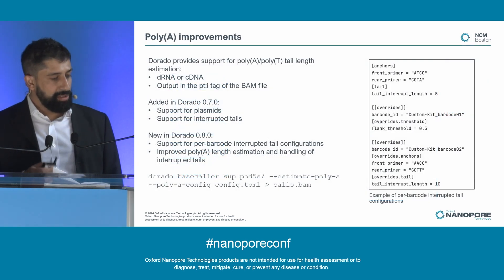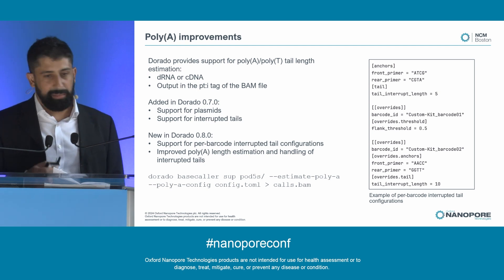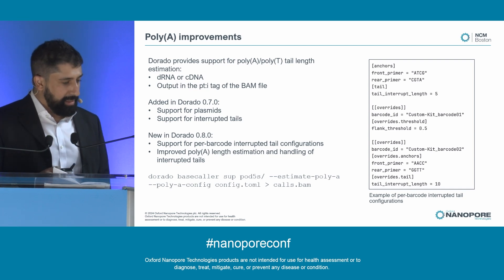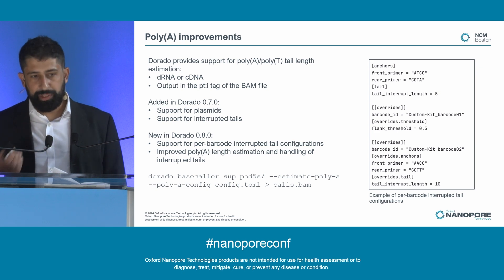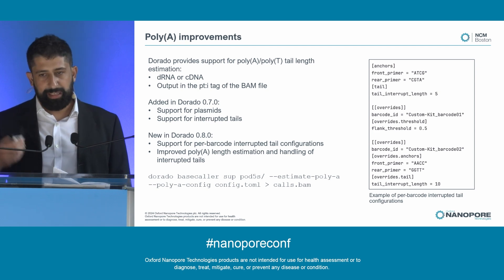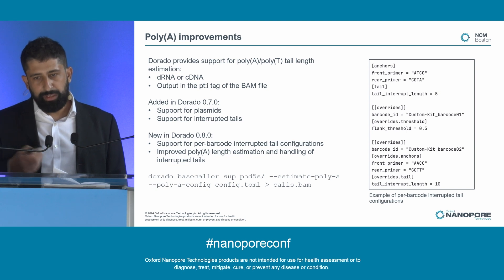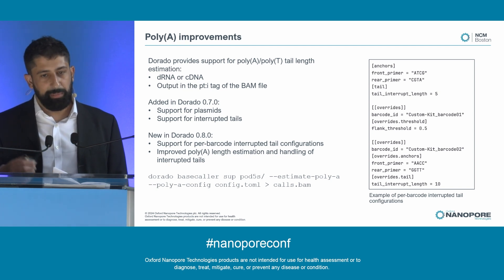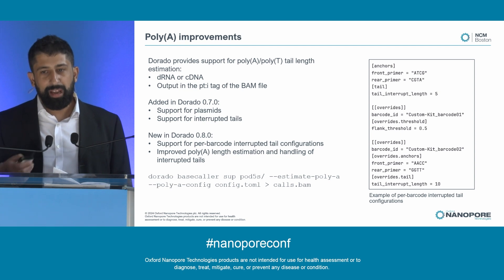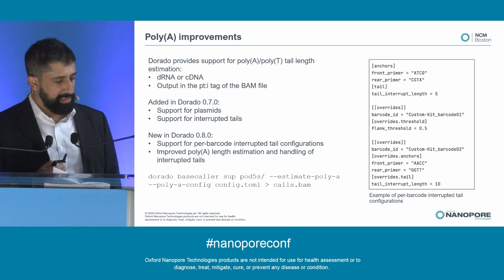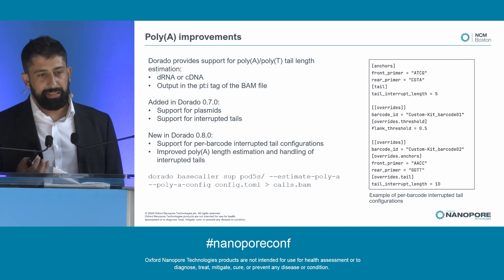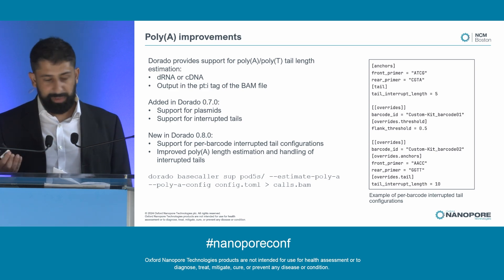Dorado provides support for poly-A tail length estimation in direct RNA and poly-T tail length estimation in cDNA. In Dorado 0.7, we added support for circular plasmids and support for interrupted tails — that is when some small fraction of the nucleotides in a poly-A tail are not themselves A-bases. Now in Dorado 0.8, we've added support for per-barcode interrupted tail length configurations, something many of our pharmaceutical customers asked for. We've also made nice improvements to poly-A tail length estimation accuracy and handling of interrupted tails.